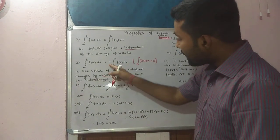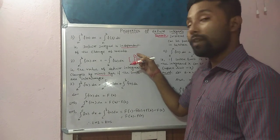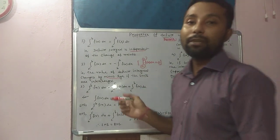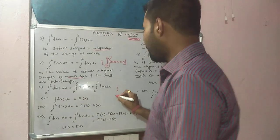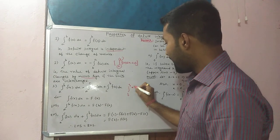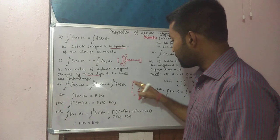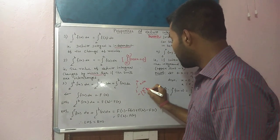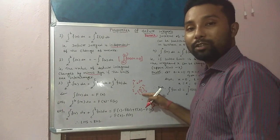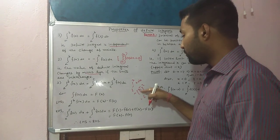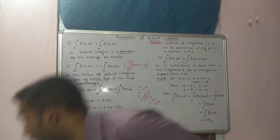There is a corollary from this property: if the upper limit and lower limit are the same, that is, integration a to a of f(x) dx is equal to 0. If upper limit and lower limit are the same, we can directly write 0. For example, integration 2 to 2 of x dx — the indefinite integral is x²/2, evaluated from 2 to 2 — gives 4/2 minus 4/2, which is 0. So if upper and lower limits are equal, the result is directly 0. This is property number 2.